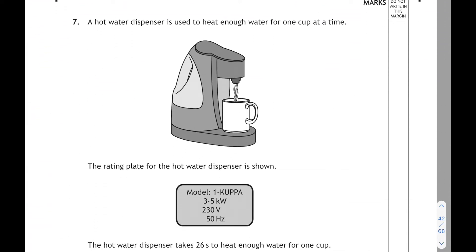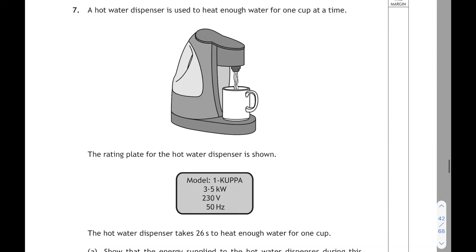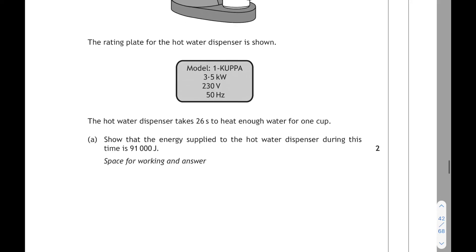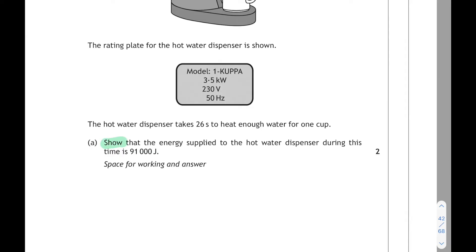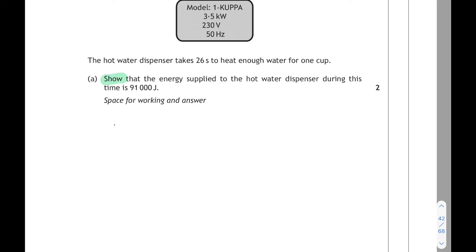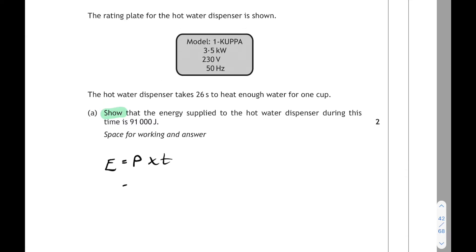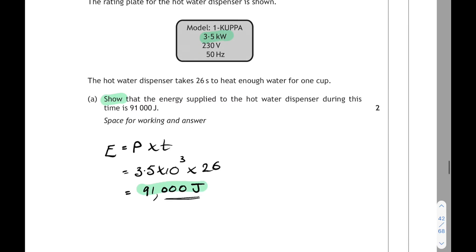Question 7. A hot water dispenser is used to heat enough water for one cup at a time and the rating plate is shown. The hot water dispenser takes 26 seconds to heat enough water for one cup. And we have to show that the energy supplied to the hot water dispenser during this time is 91,000 joules. So in a show question, make sure you show every step. There's the relationship. Energy is power times time. The power from the rating plate was 3.5 kilowatts. That's 3.5 times 10 to the 3. And the time was 26 seconds. If you do that on your calculator, you get 91,000 joules. That's what we've been asked to show. Make sure that is your final line.